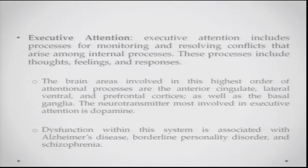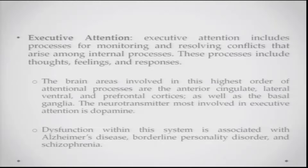The third sub-function is executive attention, which includes the processes for monitoring and resolving conflicts that arise among internal processes — when too much information is coming in and you have to select what to attend to. If there is a conflict of response, or social dilemmas such as feeling angry but suppressing it and continuing to talk peacefully, those are handled by this executive network. The brain areas involved are the anterior cingulate cortex, lateral ventral and prefrontal cortex, and the basal ganglia. The neurotransmitter involved is dopamine. Dysfunction with the executive attentional system is associated with Alzheimer's disease, borderline personality disorder, and schizophrenia.